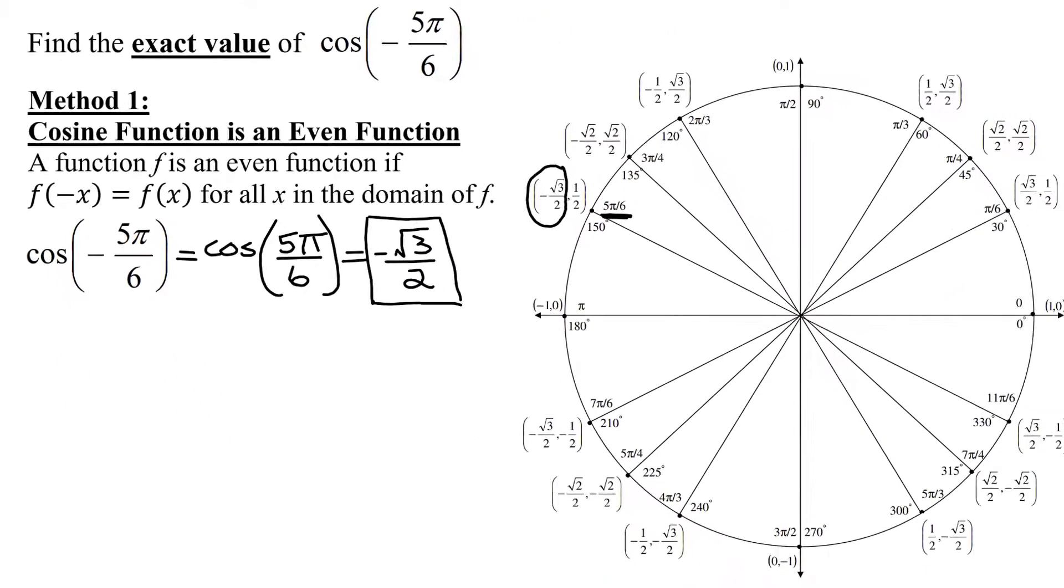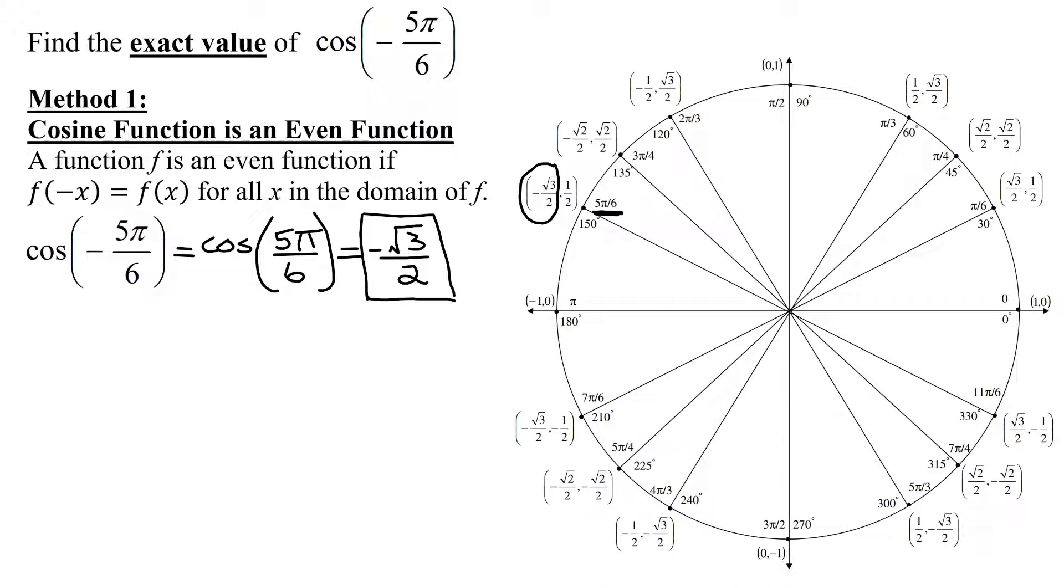The second method I'm going to use to solve this problem involves coterminal angles. So take your given angle of negative 5π divided by 6 and add 1 revolution, which since we're in radians is 2π.